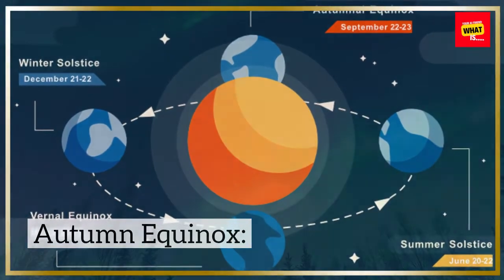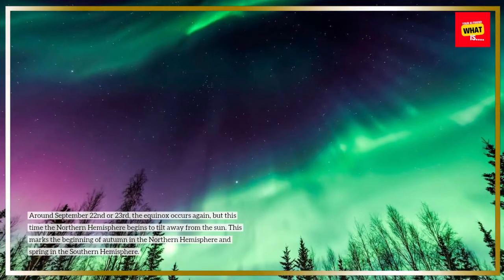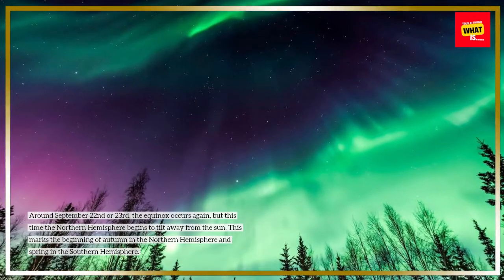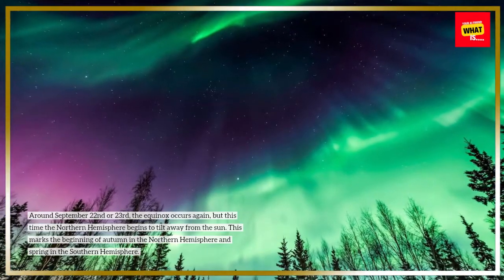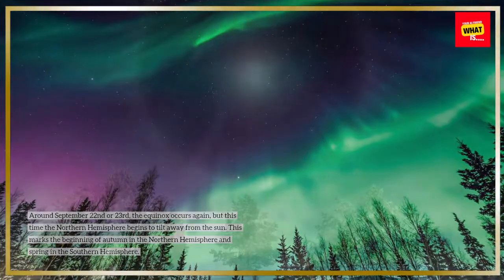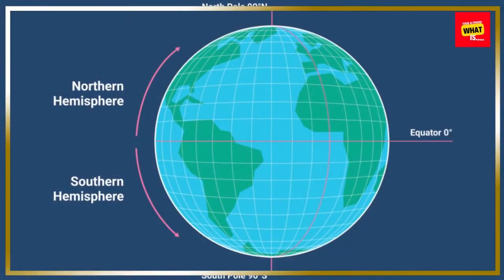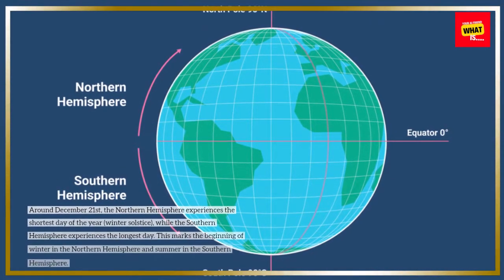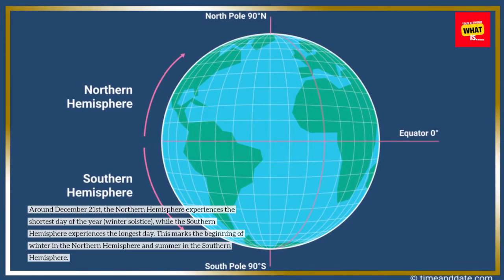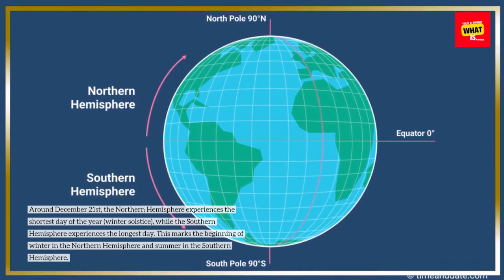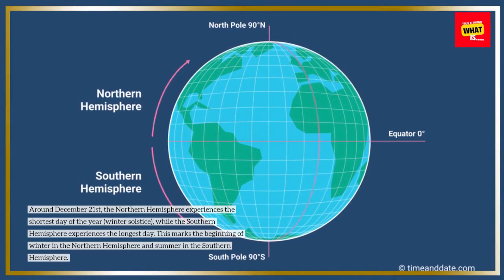Autumn Equinox and Winter Solstice. Around September 22 or 23, the equinox occurs again, but this time the Northern Hemisphere begins to tilt away from the sun. This marks the beginning of autumn in the Northern Hemisphere and spring in the Southern Hemisphere. Around December 21, the Northern Hemisphere experiences the shortest day of the year, the winter solstice, while the Southern Hemisphere experiences the longest day, marking the beginning of winter and summer respectively.